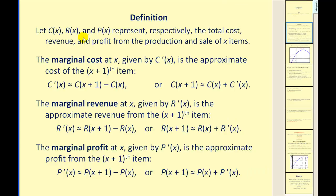If we let c, r, and p represent the total cost, revenue, and profit functions from the production and sale of x items, then the marginal cost at x, given by c prime of x, is the approximate cost of the x plus 1th item. So if we were considering an x value of 15 and we find the marginal cost function, or the derivative, and evaluate this at 15, we're actually finding the approximate cost of the 16th item.